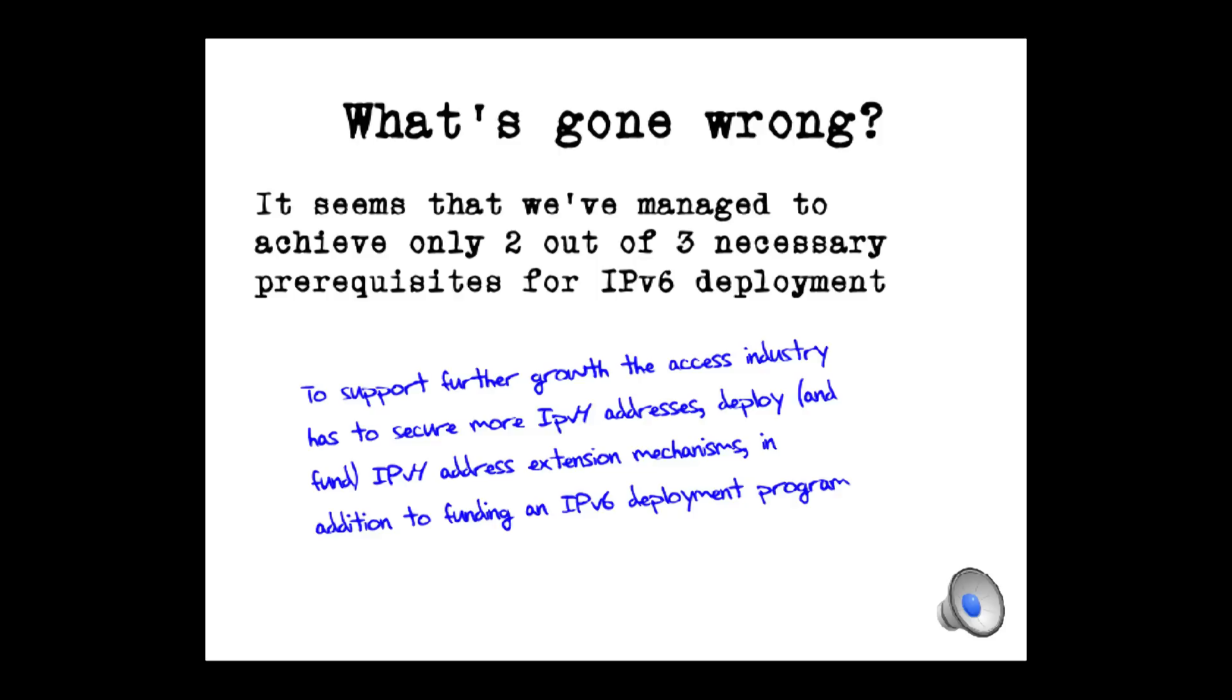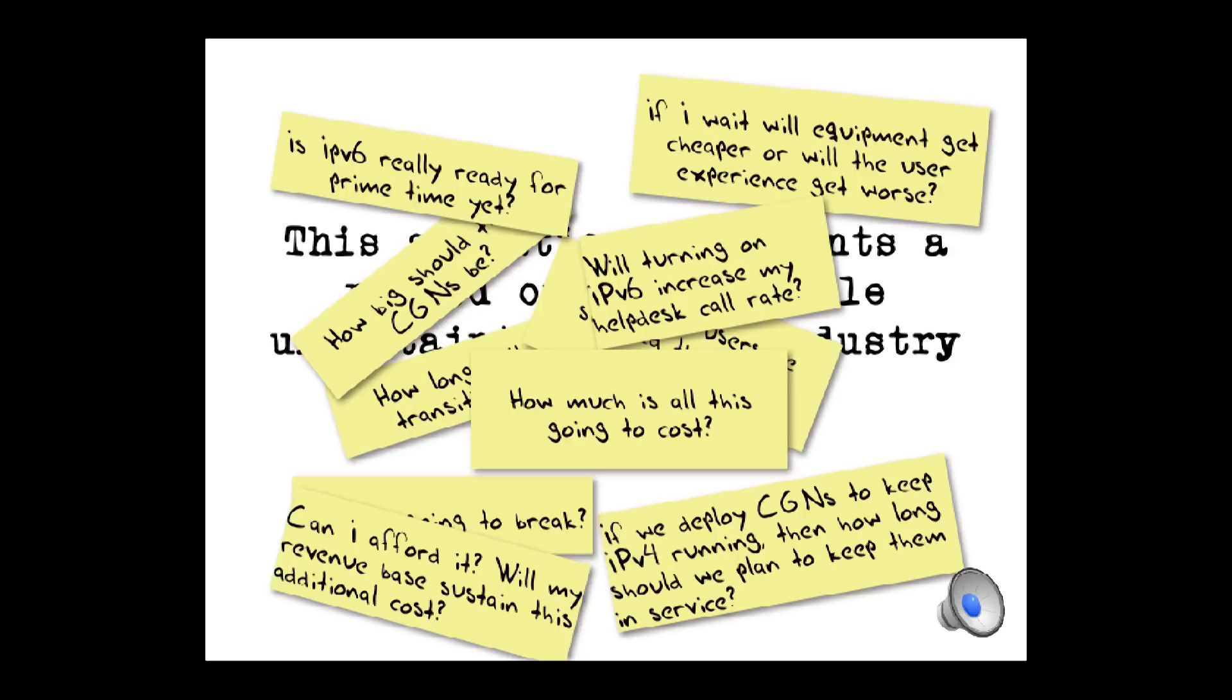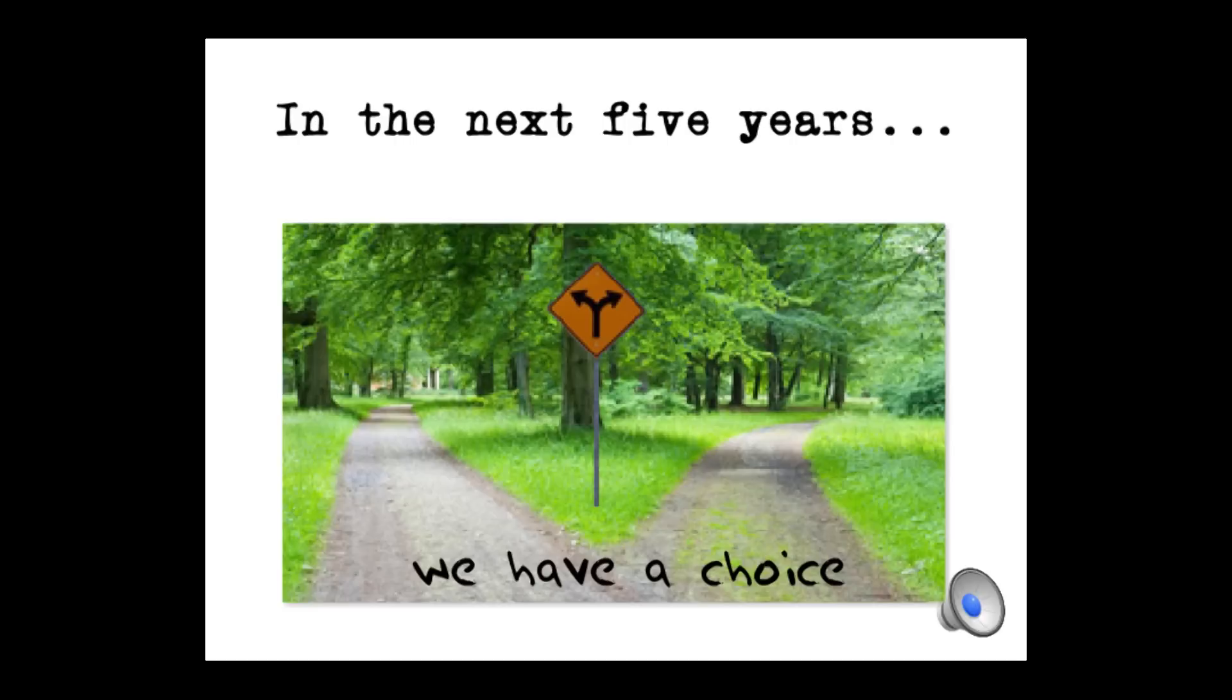So, why do we wait? Why is this taking so long? It seems that, once more, economics is the problem. That we've failed to understand the business dynamics of V6. So, what we've got now is a period of considerable uncertainty for this industry. A period where nothing is short. So, what's the question? How long will this transition take? Will it get cheaper? If we deploy CGNs, how long do I need to keep on deploying these CGNs? The questions this industry asks itself are legion. And we're not sure of what the answers are.